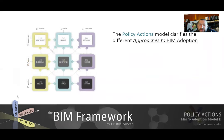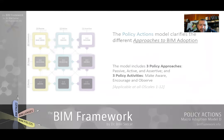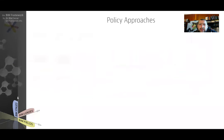The Policy Actions Model clarifies the different approaches to adoption taken by policy makers. It does that by introducing three policy approaches and mapping them against three policy activities — that is, if there is a policy maker trying to facilitate adoption within the market, there are three different approaches that can be taken.